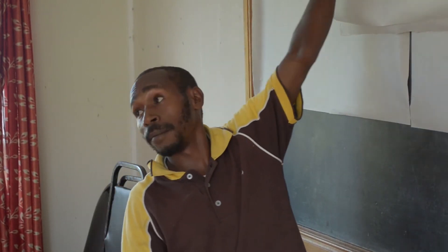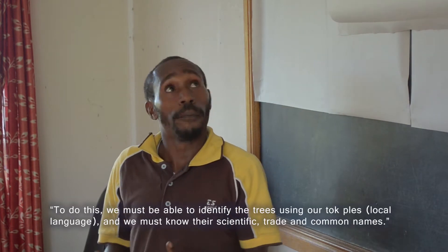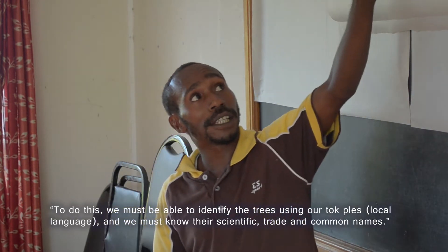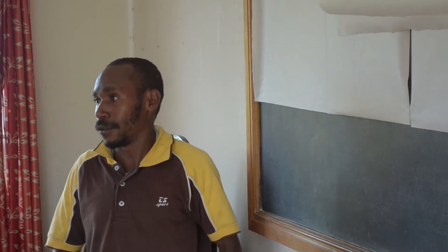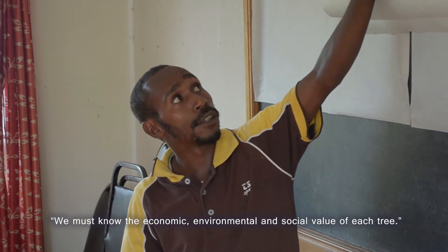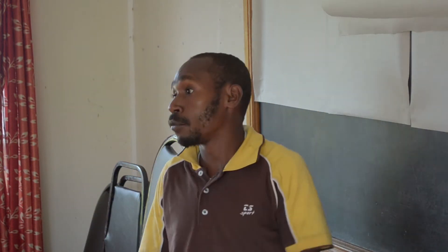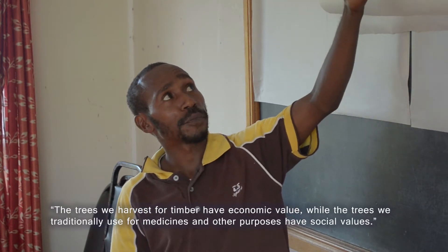The first thing we have to identify is the species. We have to give people the names — the names of the trees. We also have to consider the social environment and the economic environment.